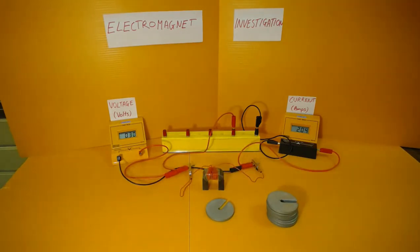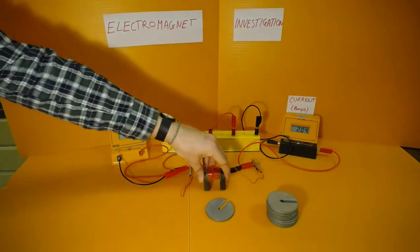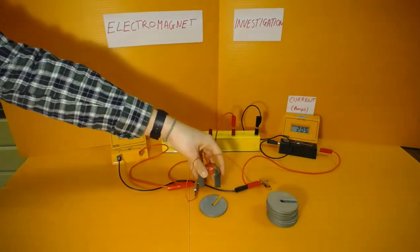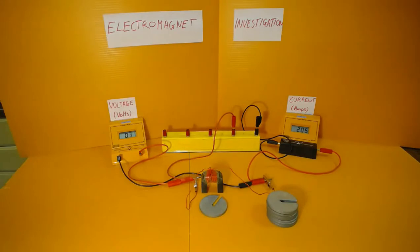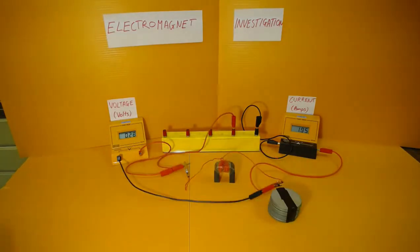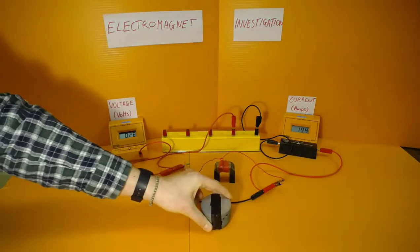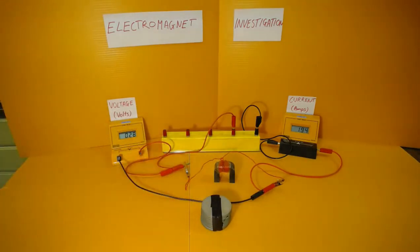Starting at around 0.3 volts and 2.04 amps, we can see that a 100 gram mass is lifted easily. With 700 grams of mass which I have taped together, it is clear to see the electromagnet only just lifts this amount of mass.